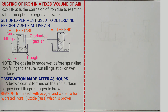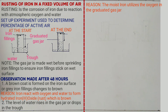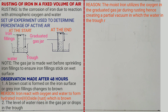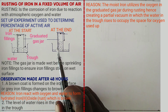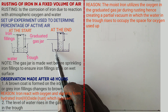Observation number 2: the level of water rises in the graduated cylinder, or the level of water drops in the trough. The reason for that observation is the moist iron utilizes oxygen in the graduated cylinder for rusting, creating a partial vacuum in which water in the trough rises to occupy the volume previously occupied by the oxygen. So at the end of the experiment, water rises in the cylinder and drops in the trough.